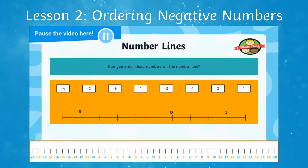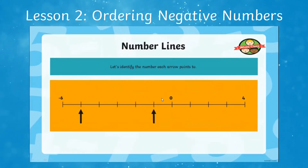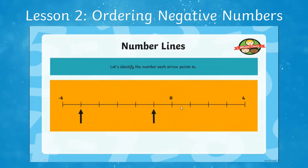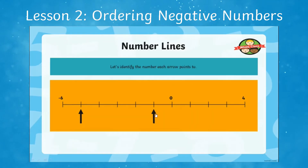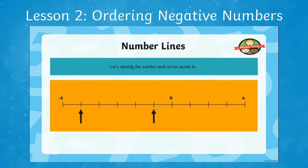Pause your screen here. This arrow goes beyond zero and it is next to zero, so this arrow must point to negative one. These lessons could be used in the classroom or sent home as a home learning task.